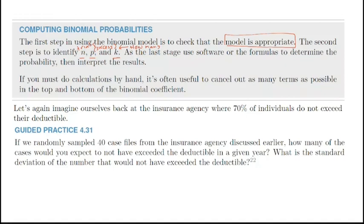From your textbook, chapters 4.1–4.3 discuss an insurance agency where 70% do not exceed their deductible. If we randomly sample 40 case files from an insurance agency that meets these requirements, how many cases would you expect to not have exceeded the deductible in a given year? The keyword here is 'expect' — that is mu.